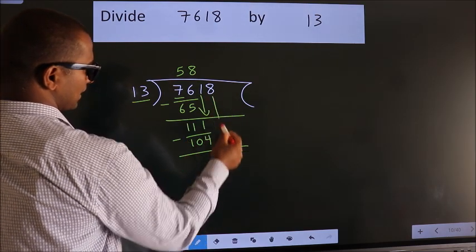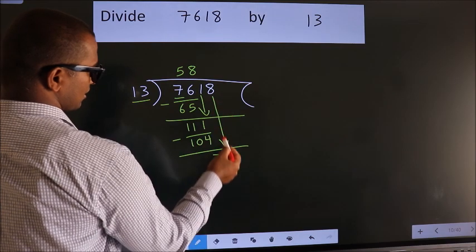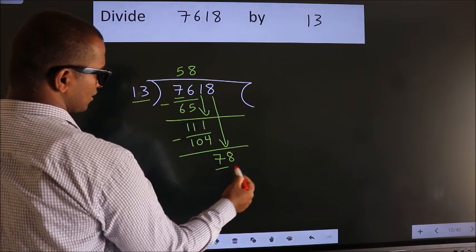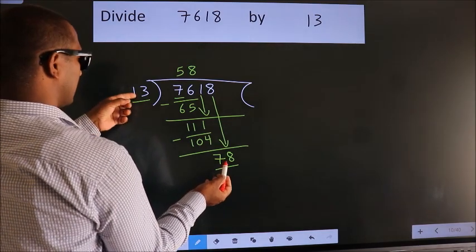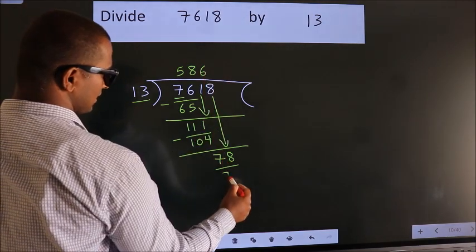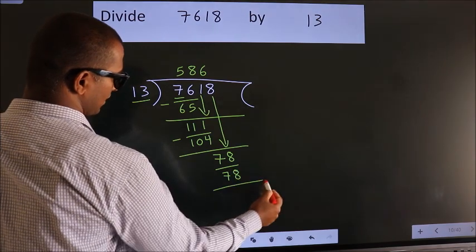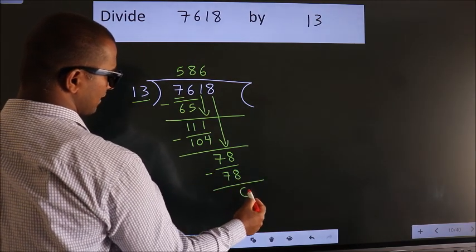After this, bring down the beside number. So 8 down. So 78. When do we get 78 in the 13 table? 13 times 6 equals 78. Now we subtract. We get 0.